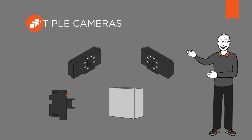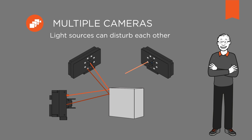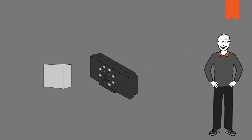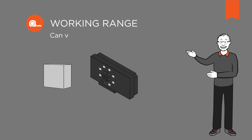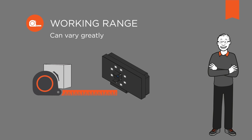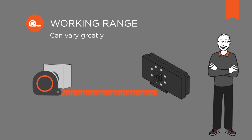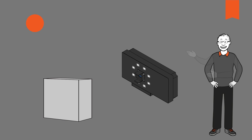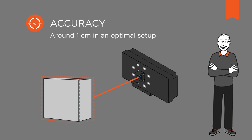Multiple cameras can skew the measurement because their individual light sources can disturb each other. Furthermore, depending on the manufacturer, the working range of TOF cameras can vary greatly. Also, the depth accuracy of this camera is still only around 1 cm in an optimal setup.